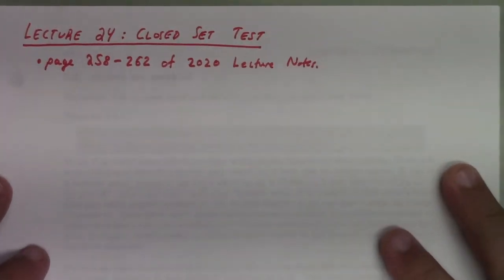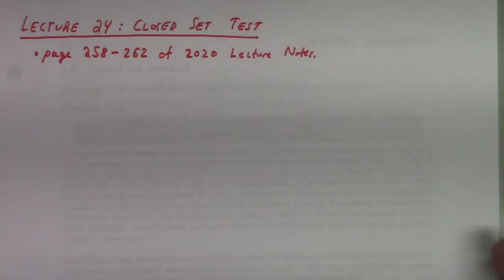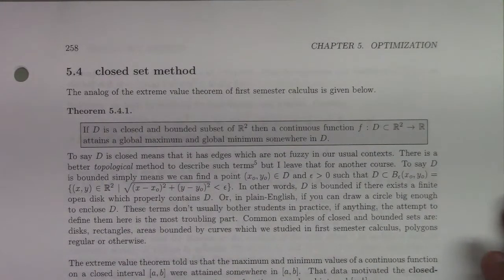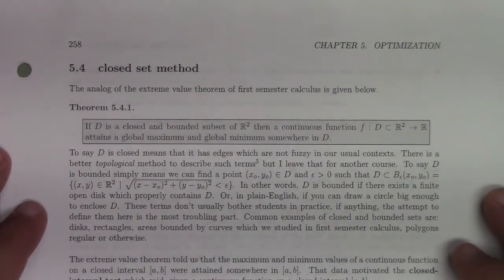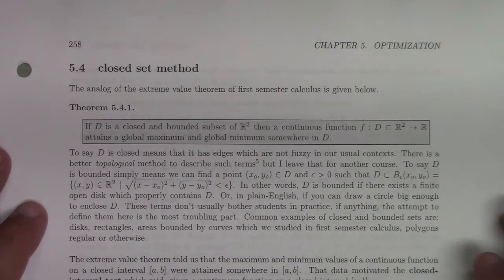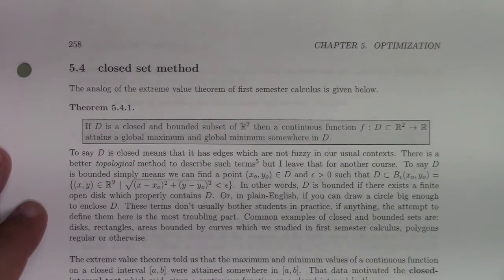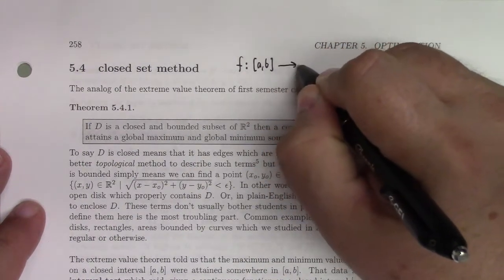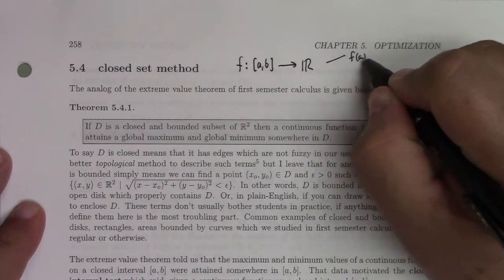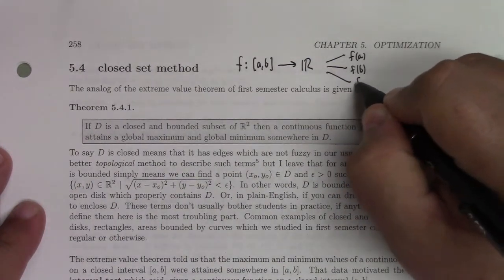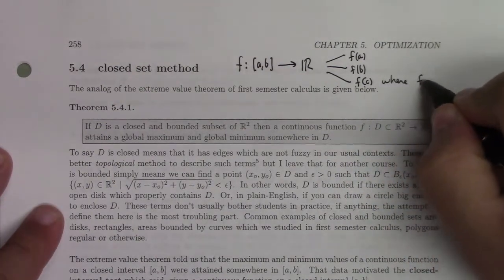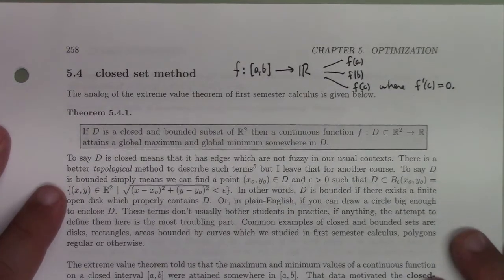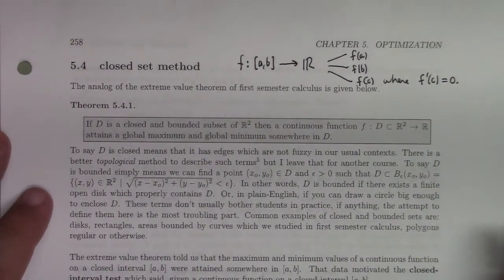This is lecture 24 on the closed set test. We'll be looking at pages 258 to 262 of the 2020 lecture notes. This is the closed set method, the analog of the closed interval test in calculus 1. For a function from AB to the reals, you basically look at F of A, calculate F of B, and then calculate F of C where F prime of C equals zero. Those three things give you the closed interval method, which tells you the maxes and mins for a continuous function on a closed interval.